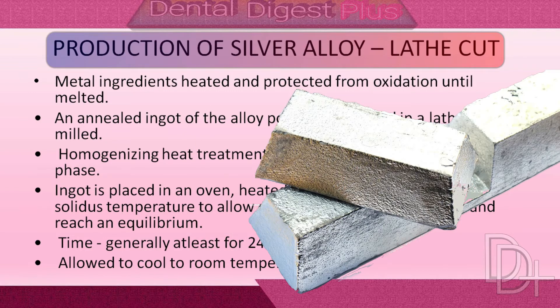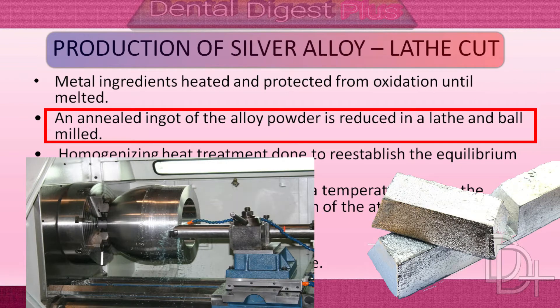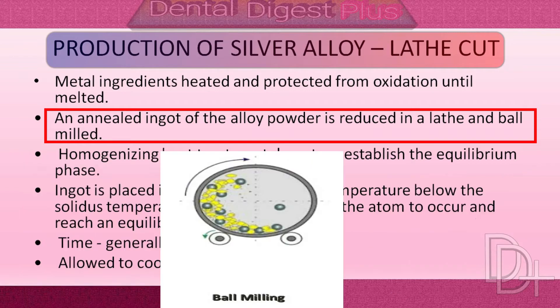An ingot of a silver-tin alloy has a cored structure and contains non-homogeneous grains of varying composition. The ingot is lathe-cut to produce the particles, and ball-milled to reduce their size.